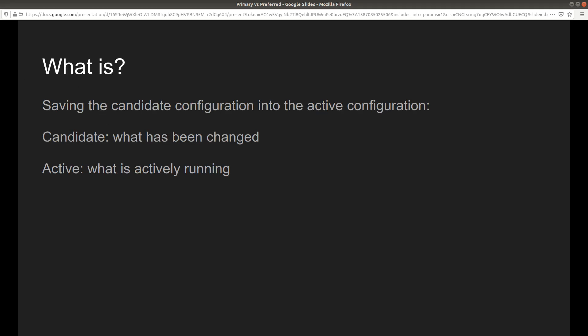We are going to talk about the commit command in Juniper JunOS. This is for the JNCIA certification. There are actually two parts: before you commit, you have the candidate configuration, and after you commit it becomes the active configuration.